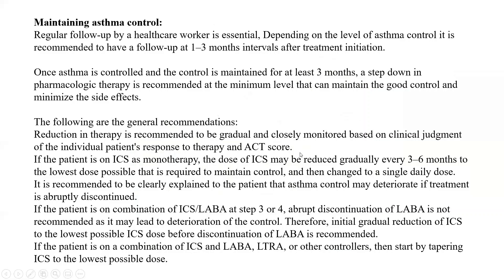Now moving on to maintenance: regular follow-up with a healthcare worker is essential, at one to three month intervals. Once asthma is controlled and maintained for at least three months, a step-down in pharmacological therapy is recommended - a step down, not abrupt discontinuation. All general recommendations share a common denominator: therapy should be reduced gradually, not abruptly, and patients should be clearly explained that asthma control may deteriorate if they abruptly discontinue. Taper slowly.